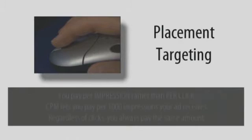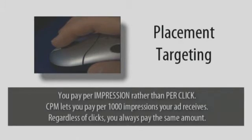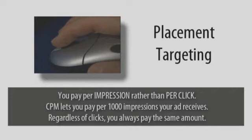With Placement Targeting, you pay per impression rather than pay per click. Google Placement Targeting works primarily with CPM, or cost per thousand impressions. With CPM bidding, you set the price you'd like to pay for each 1,000 impressions your ad receives, whether users click on the ad or not. This is a huge advantage and will slash your advertising budget if you use it correctly. But if used wrongly, this could blow your marketing budget in a few hours, and you'll have little to show for it.